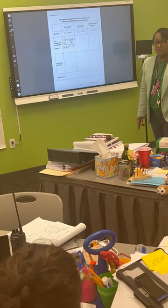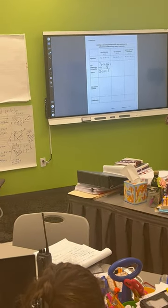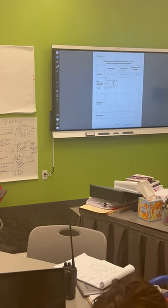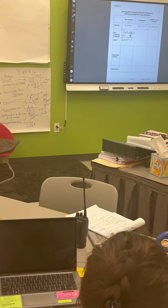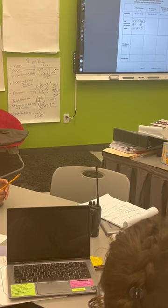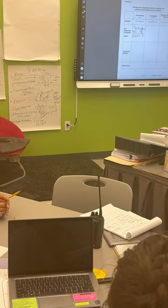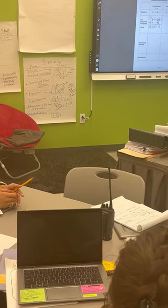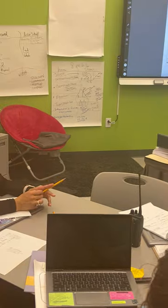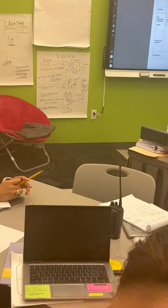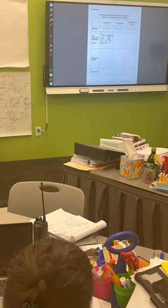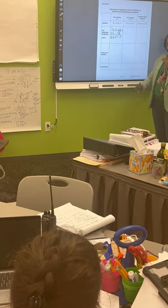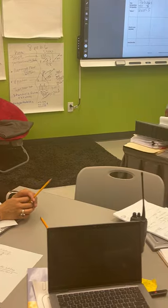We need to do the inverse operation. So at this point now we have 2x minus 3 equals 5. Do we have the variable isolated yet? No. Now you're going to turn and talk with your team and your partner, and you're going to try to use the inverse operation to isolate. As I come around, I should see you using the inverse operation.